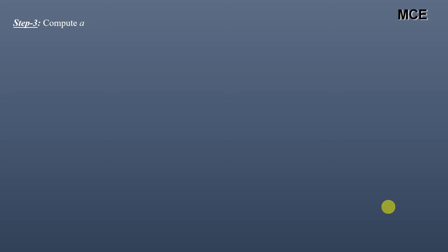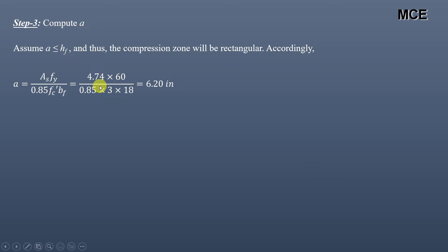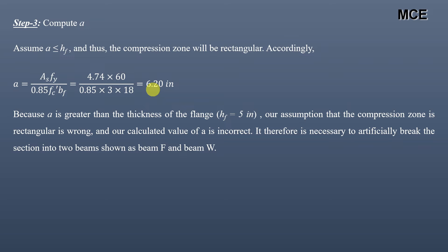Next, we find the depth of the Whitney stress block, A. First, we assume this depth is less than or equal to the flange thickness, meaning the compression zone is rectangular. Accordingly, A = (As × fy) / (0.85 × f'c × bf). With As = 4.74 in² (6 No. 8 bars), fy = 60 ksi, f'c = 3 ksi, and bf = 18 inches, we get A = 6.2 inches. Since this value exceeds the flange thickness of 5 inches, our assumption of a rectangular compression zone is wrong and the calculated value of A is incorrect.